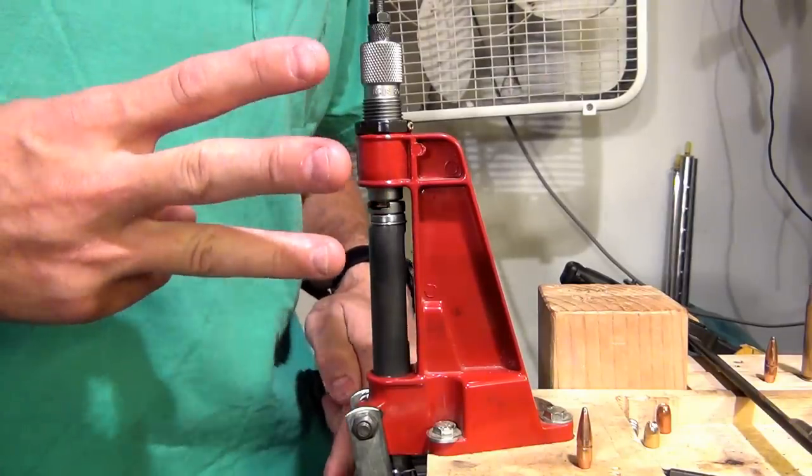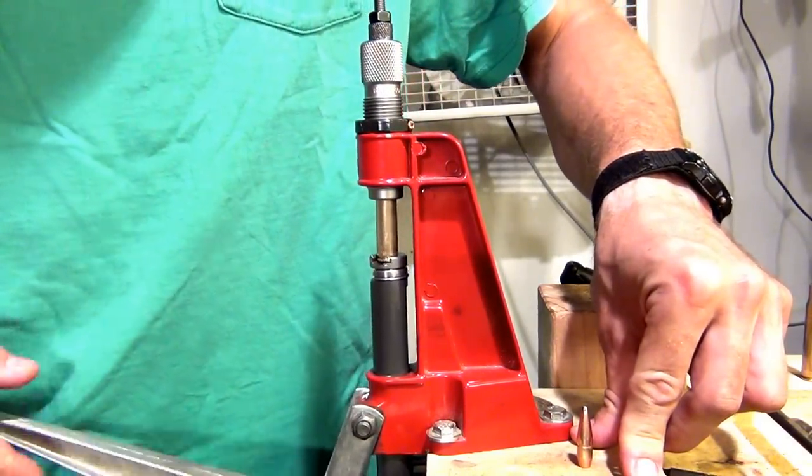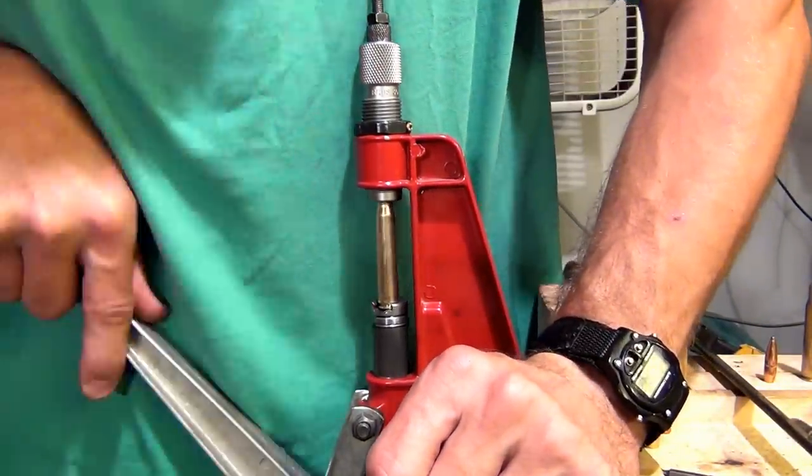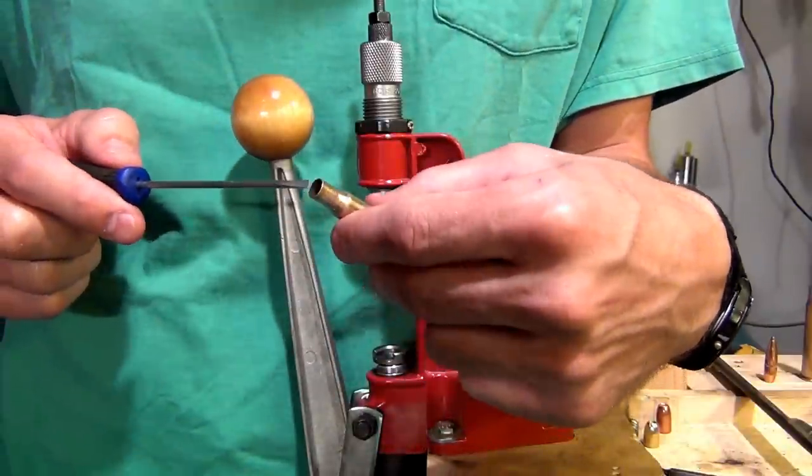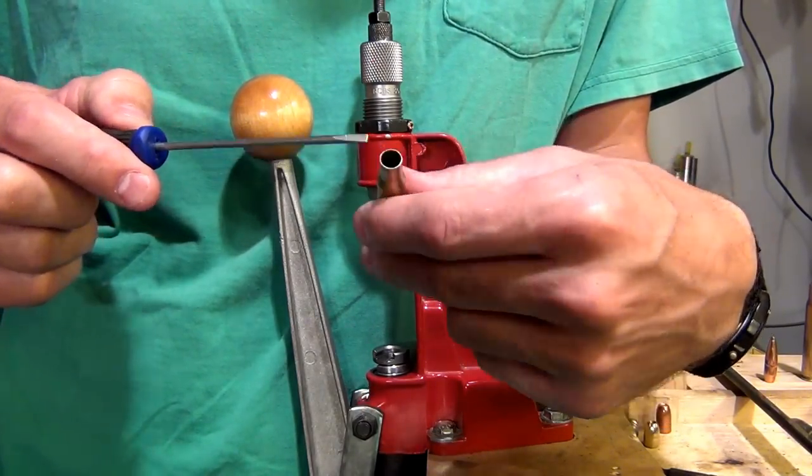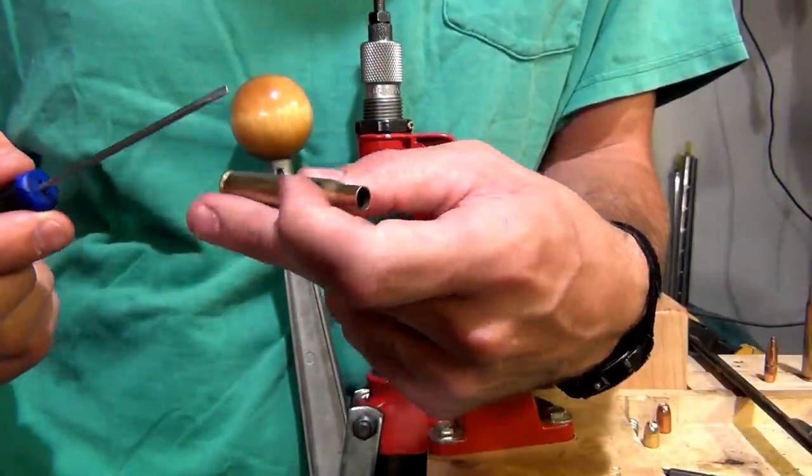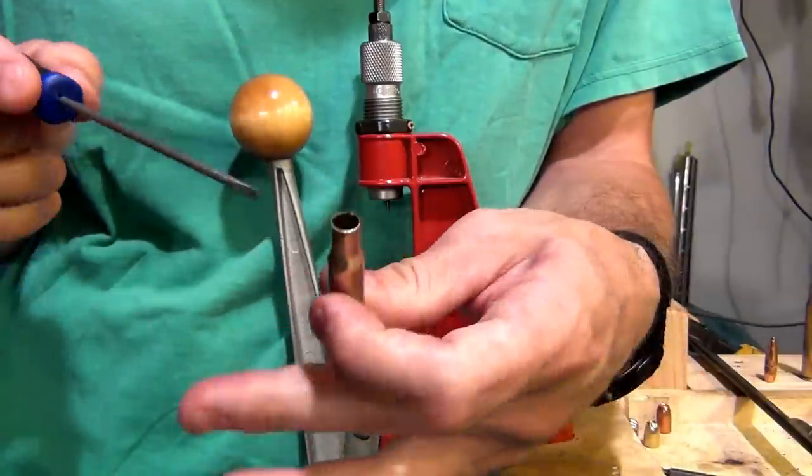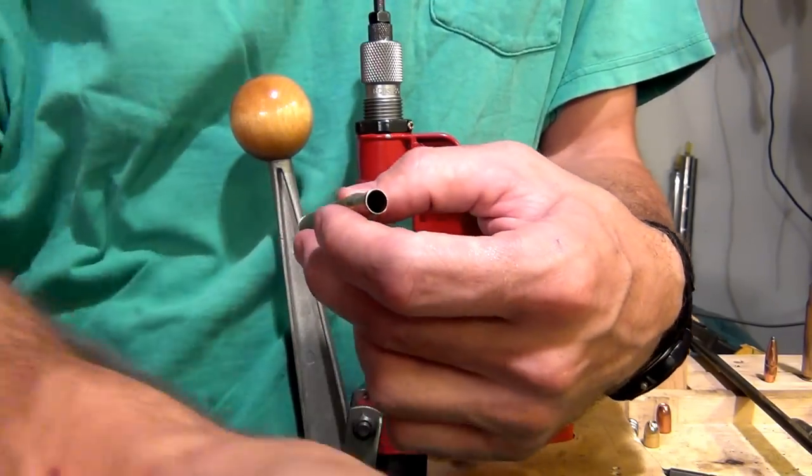Now on the down stroke, it's going to do a third thing, and that is you'll feel your press will kind of get caught right there on the down stroke. The purpose of that is so that when you go down with your press, that catch that you feel is the expander ball coming through the case mouth. What that does is that establishes the correct diameter for your case mouth. So we've done three things. We knocked out the old primer. We've resized the full length of the brass, and we've also taken the diameter of the case mouth and made it to what it needs to be.